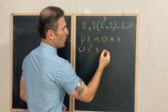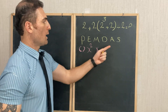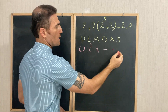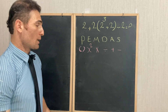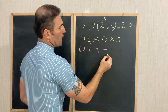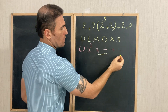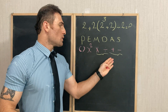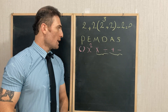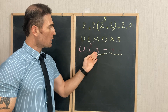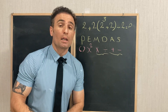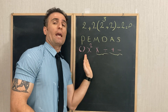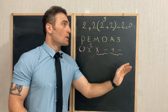D stands for Division, A stands for Addition, and S stands for Subtraction. Remember, multiplication and division have the same priority, and so do addition and subtraction. If we have both multiplication and division in one expression, we need to start from the left and continue to the right.